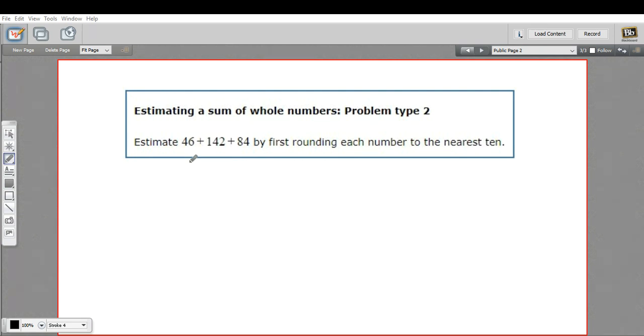The rule about rounding is if this number is less than 5, you round down. So if this was a 3 or 2 here, I'd round down to 40. But if it's 5 or greater, you round up. So this would be 50.